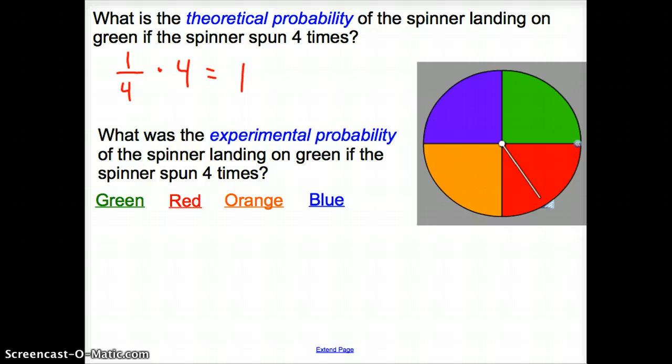Now, with experimental probability, let's see how many times it actually does land on green. So the first one is orange. The second one, as the anticipation builds, is green. 1. Next is green. We have 2 for green. And then we're going to spin it one more time. Just imagine if we did this 16 times. Take a while. And I'm going to call that orange.